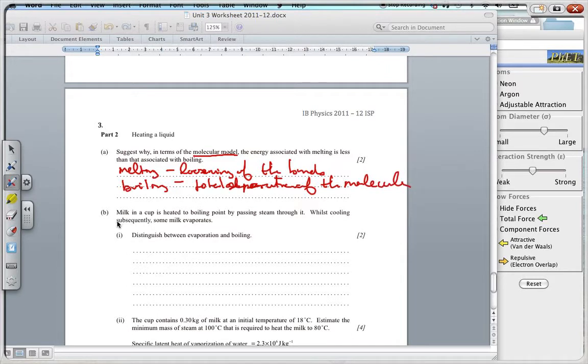Now, in this one over here, B, milk in a cup is heated to boiling point by passing steam through it, whilst cooling subsequently, some milk evaporates. Distinguish between evaporation and boiling. So, evaporation, really, is a situation where,